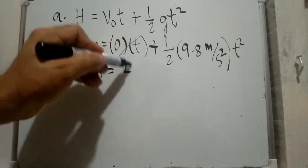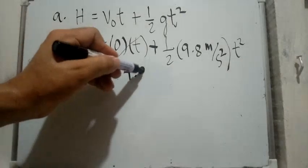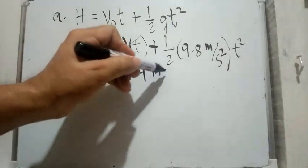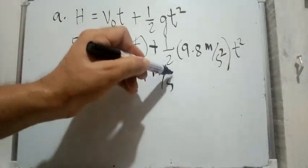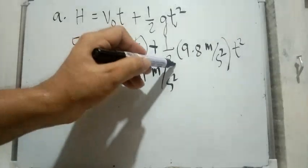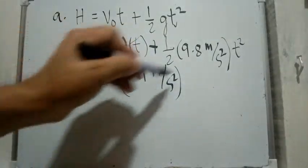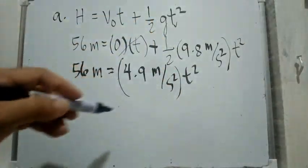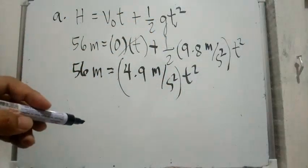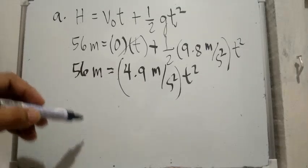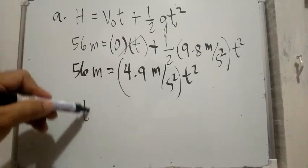This simplifies to 56 meters equals 4.9 m/s² times t squared. Now we solve for t squared.